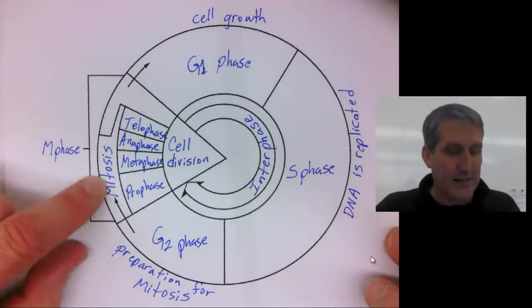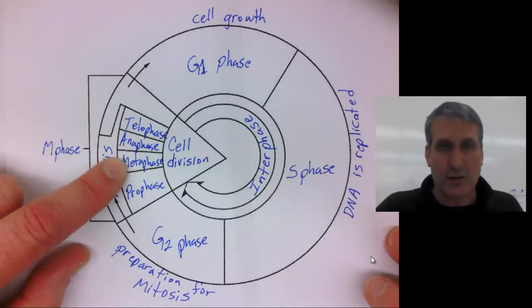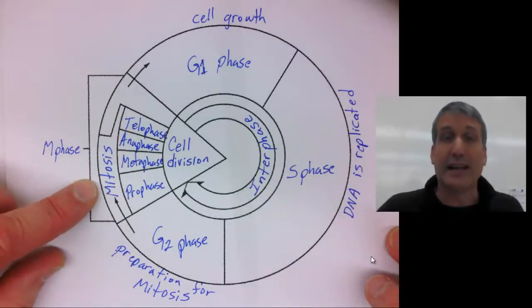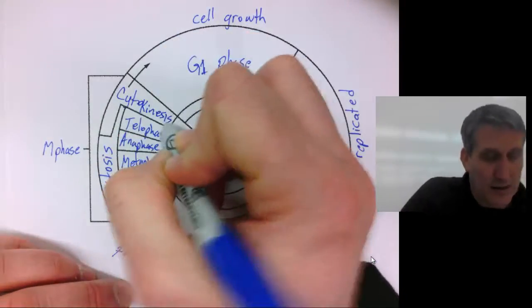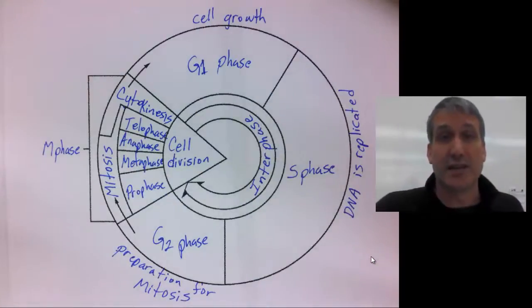This comprises the division of the nucleus part. So after the nucleus has been divided, then cytokinesis occurs, which is the division of the cytoplasm.